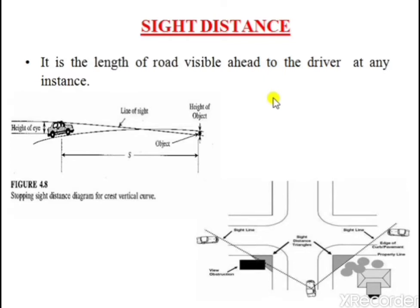Let us start with sight distance. What is sight distance? It is the length of road which is visible ahead to the driver at any instant. Sight distance should be proper in order to avoid the number of accidents occurring on a highway.